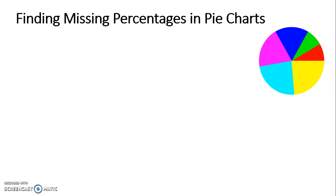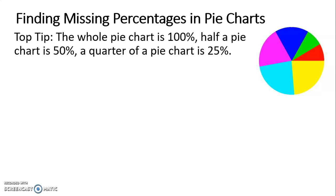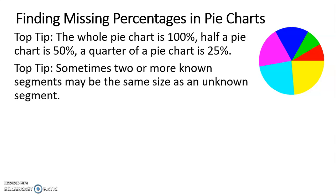Let's go through some top tips. Top tip 1: always remember that the whole pie chart, the full circle, represents 100%. Half of a pie chart is 50% and a quarter of a pie chart would represent 25%. Second top tip: sometimes two or more known segments will be the same size as another unknown segment. So just look visually at the segments in the pie to see if you can combine them together because they're the same size as one of the unknowns.